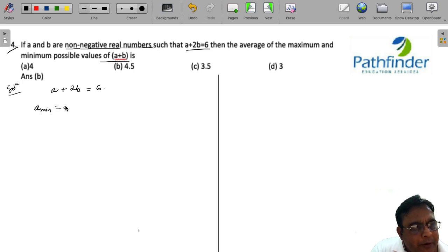So the minimum value of A is 0, and the minimum value of B is also 0.